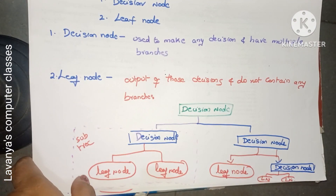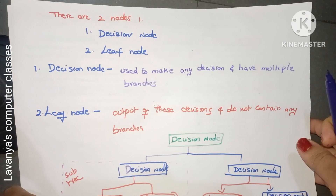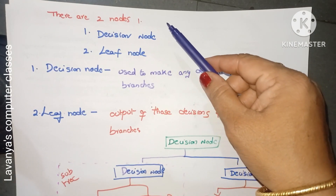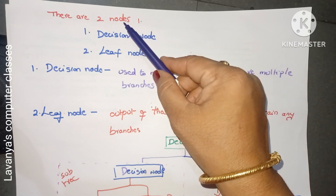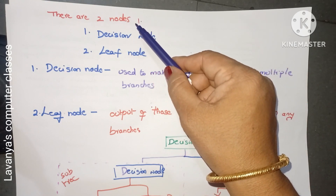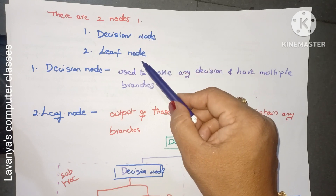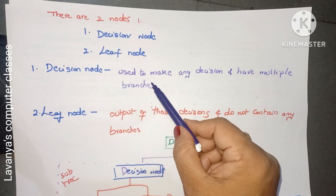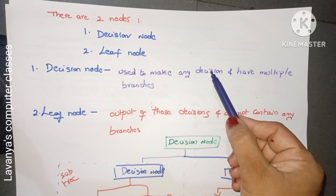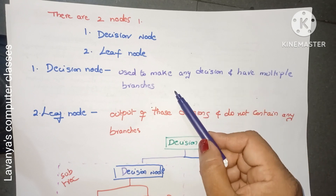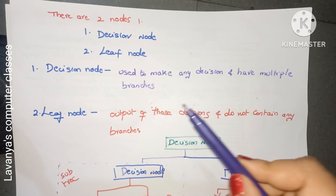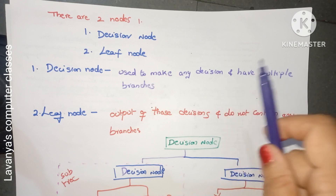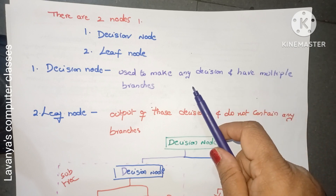Decision tree is a tree structure diagram made up of a collection of nodes. All nodes are divided into two types: decision nodes and leaf nodes. A decision node is used to make decisions and has multiple branches. Decision nodes are like root nodes — used for making a decision, from which you have multiple branches.